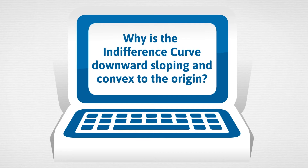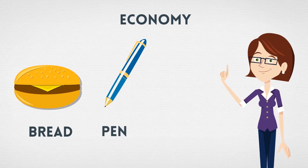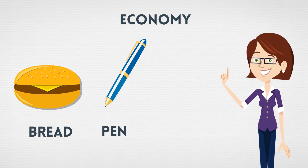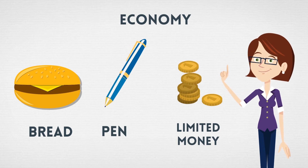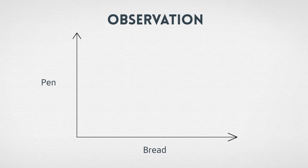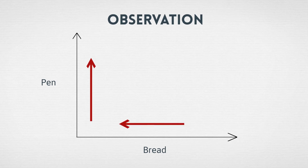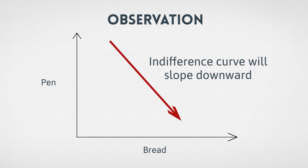For simplicity, assume that an economy produces only two goods — say bread and pen. Given a limited budget, what will be your pattern of consumption? The first observation is that if you wish to purchase more of bread, you will reduce your consumption of pen, and if you want more of pen, you will reduce your consumption of bread. This is because of a limited amount of money. Since there is an inverse relationship between bread and pen, the curve will slope downward, or the function will be decreasing.